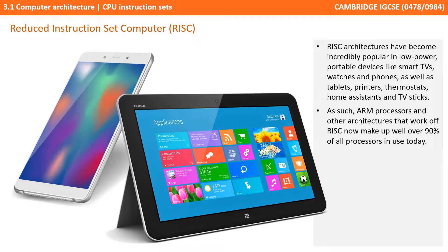RISC architectures have become incredibly popular in low power and portable devices such as smart TVs, thermostats, smart watches, phones, tablets, printers, home assistants, TV sticks, and many more. As such, ARM processors and other architectures that work off of RISC now make up well over 90% of all processors in use today.